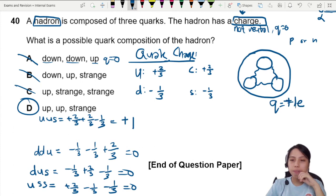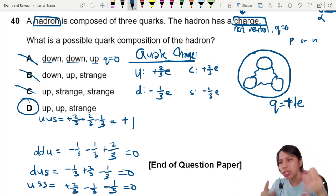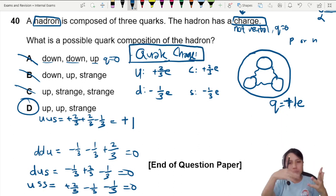By the way, these are all in terms of e. I didn't write the e because we're just adding together to see which one equals zero. So best choice you can choose is D. You need to know, you must memorize the quark charge of the up, down, charm, strange, top, bottom.